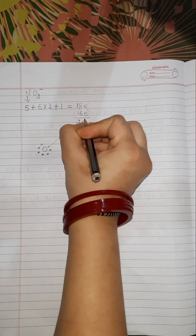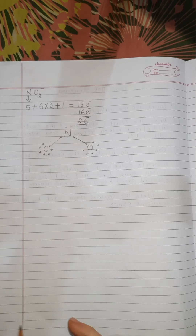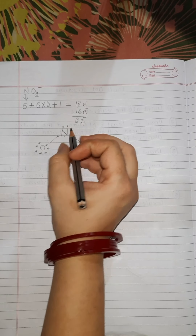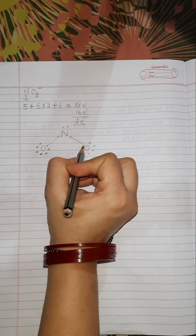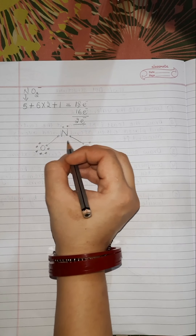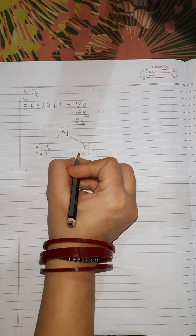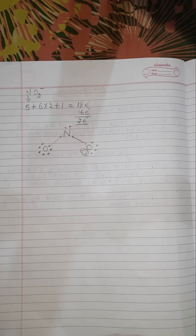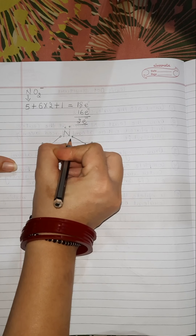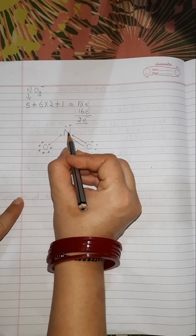Two electrons remain. We place these 2 remaining electrons on the central nitrogen atom. Now checking nitrogen's octet: it only has 6 electrons, so it still needs 2 more. We take 2 electrons from one of the oxygen atoms and place them as a double bond between nitrogen and that oxygen.